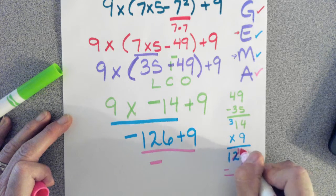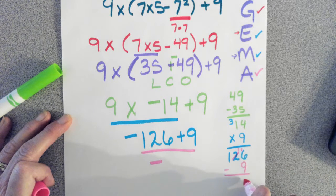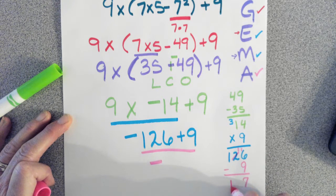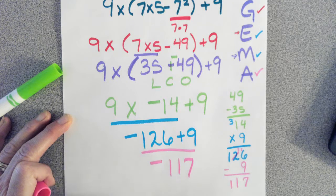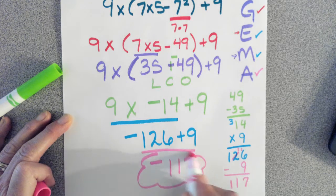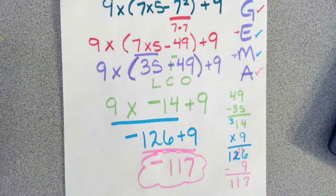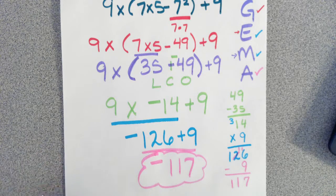Borrow from the 2. 16 minus 9 is 7, giving me 117 negatives as our final answer. I hope this video helps you with order of operations, and good luck!